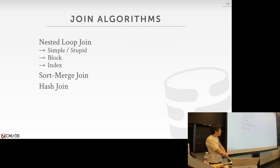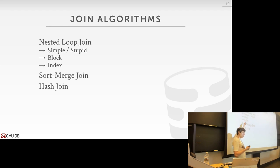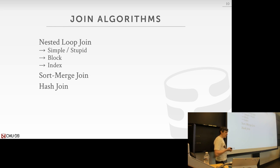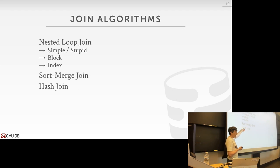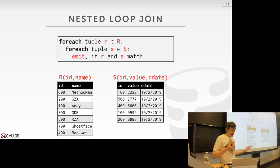In general, there are three classes of join algorithms. There's the nested loop join, which is the most basic one — every database system supporting joins will at minimum have something that looks like a nested loop join. Then we'll talk about sort merge join, which builds on the sorting we discussed last class. And then hash join, which is the most important algorithm, because it's almost always going to be the fastest one.